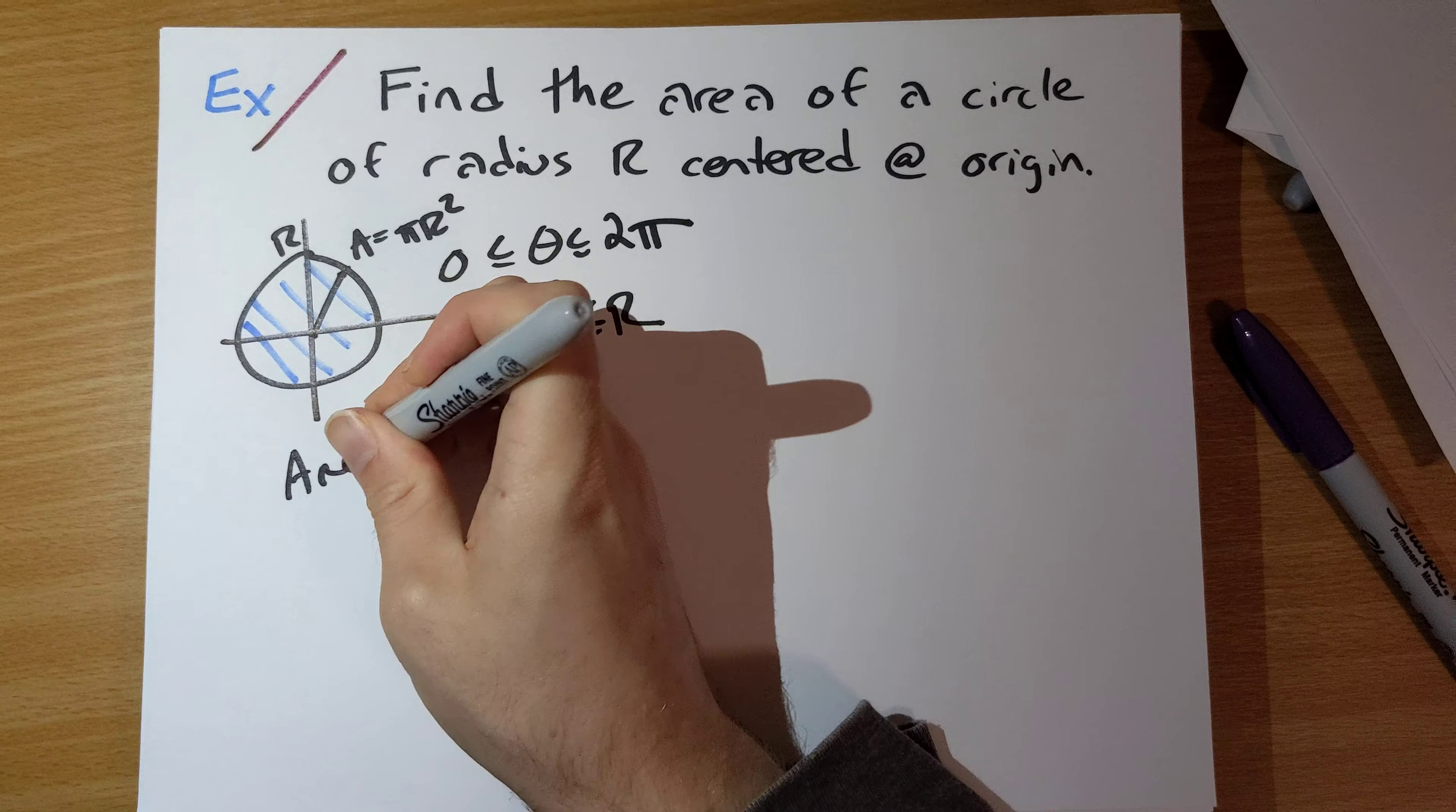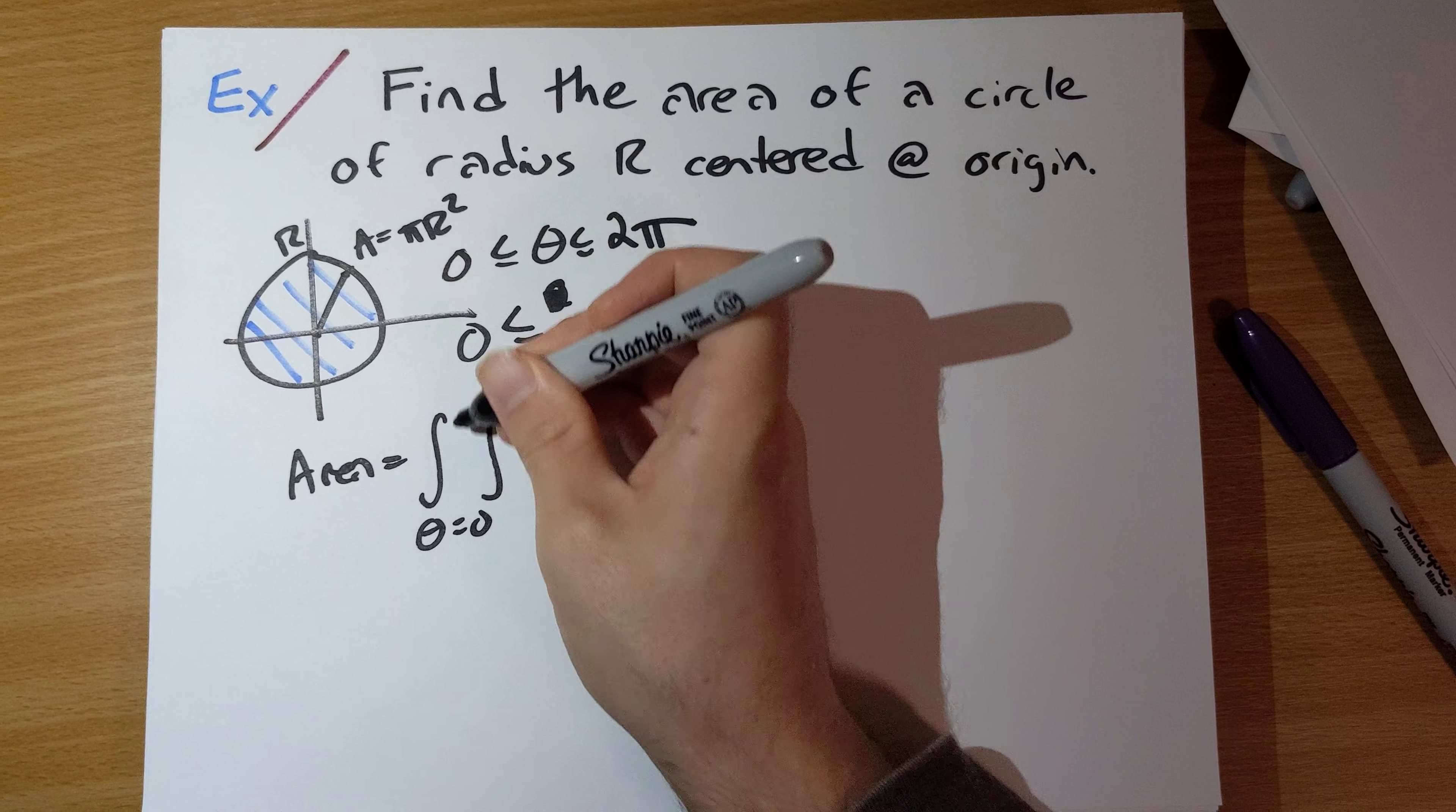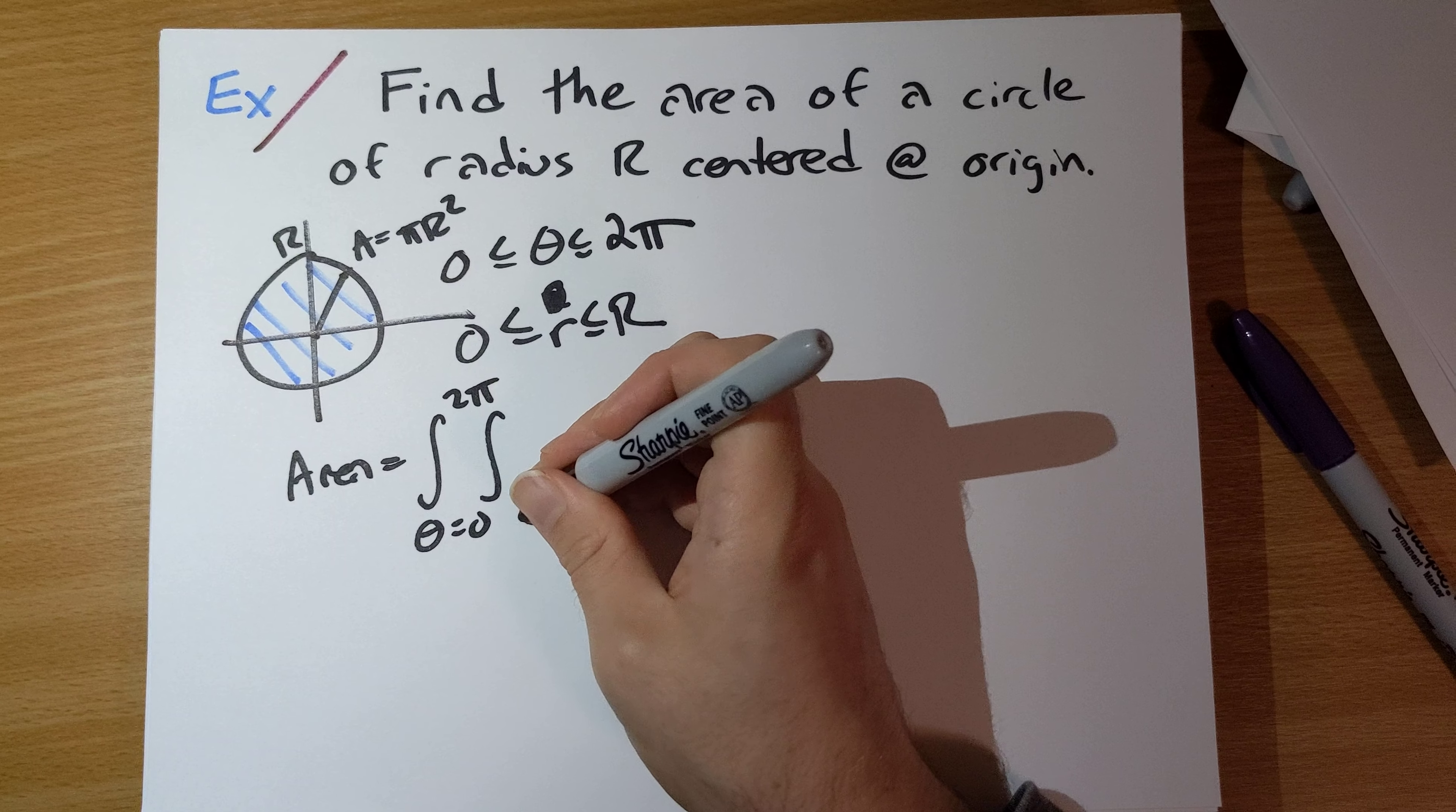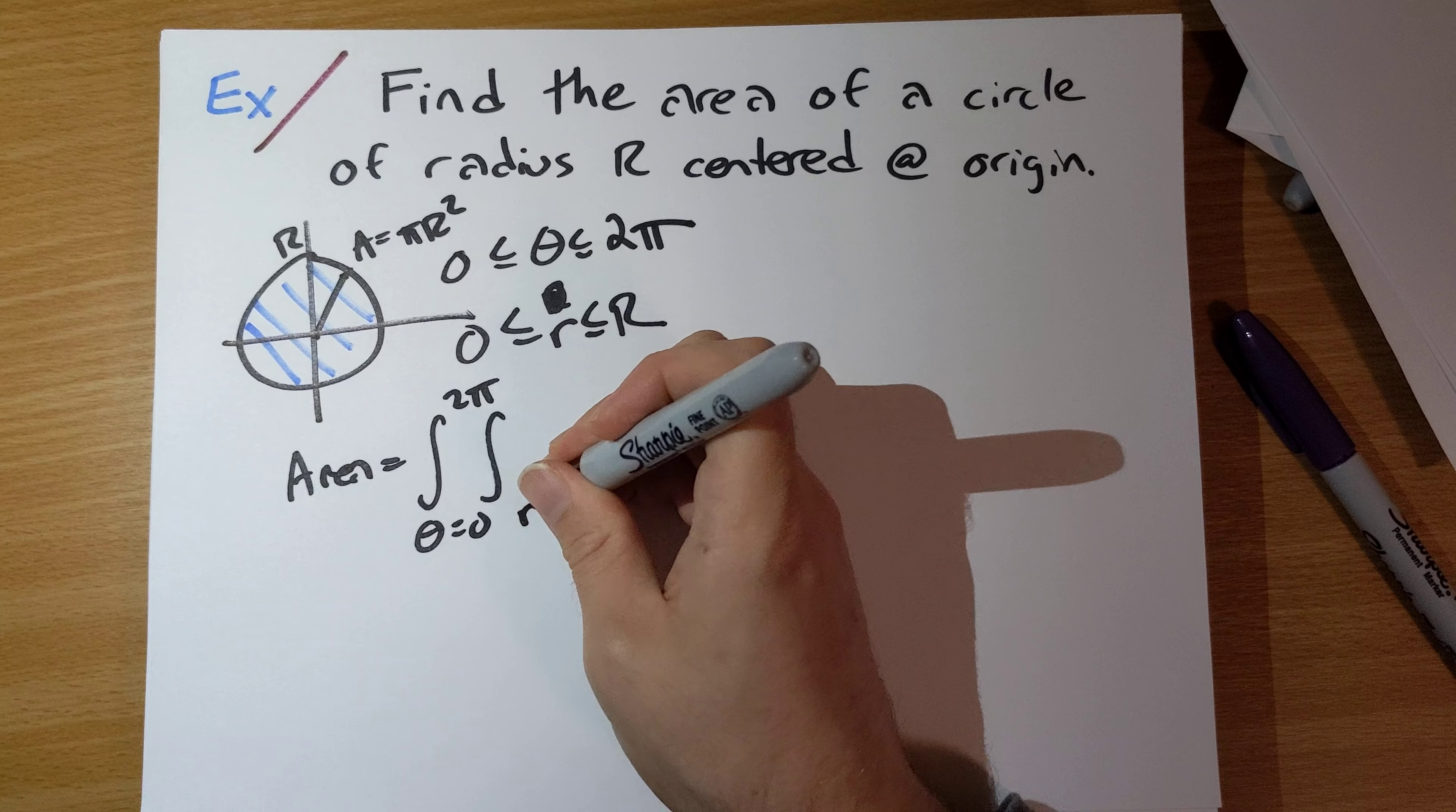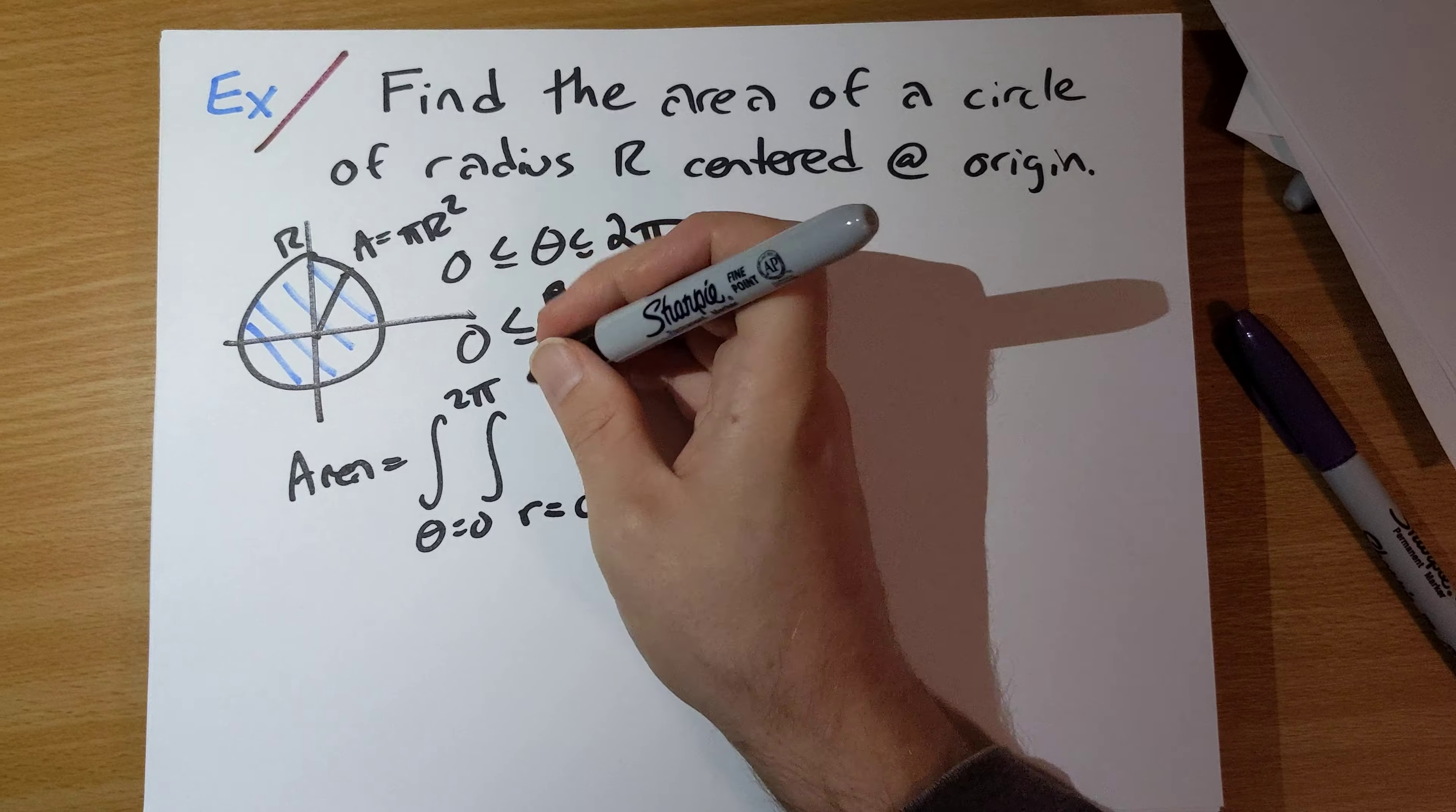And so our area is going equal, the integral of θ runs from 0 to 2π, and r runs from 0 to big R of r dr dθ.